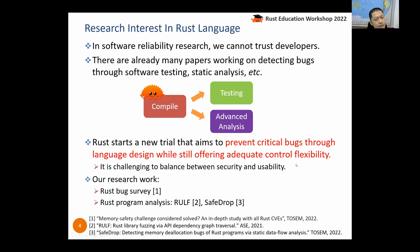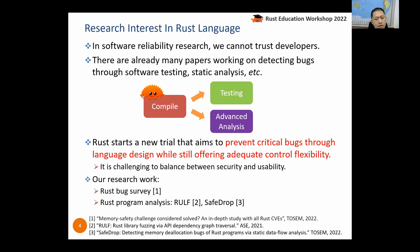Why am I interested in Rust? Because I'm doing software reliability research, and in this field we cannot fully trust developers. In the past, many papers have worked on detecting bugs through software testing, static analysis, or dynamic analysis, but there are still many bugs in software. Rust aims to tackle this problem from a new angle — it tries to prevent critical bugs through language design whilst still offering adequate control flexibility. The goal is ambitious.